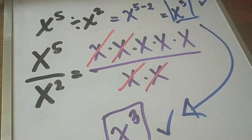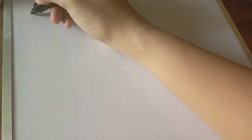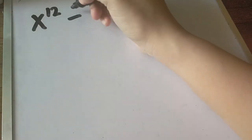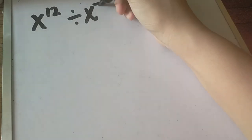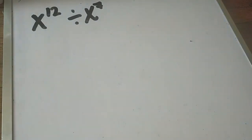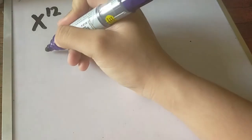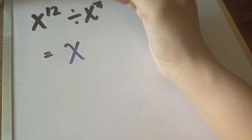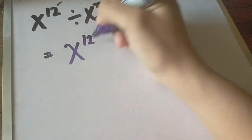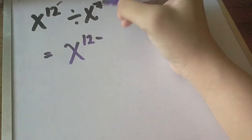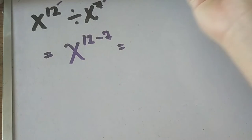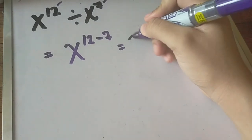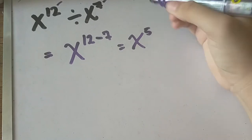Another example: we have x raised to 12 divided by x raised to 7. Our operation is division and we have the same base, so we apply the quotient rule. We copy the base and subtract the exponent of the dividend minus the exponent of the divisor: x raised to 12 minus 7, which gives us x raised to 5 as our final answer.